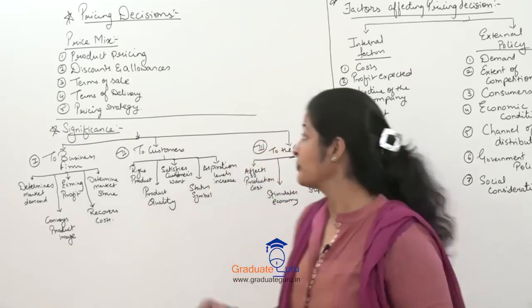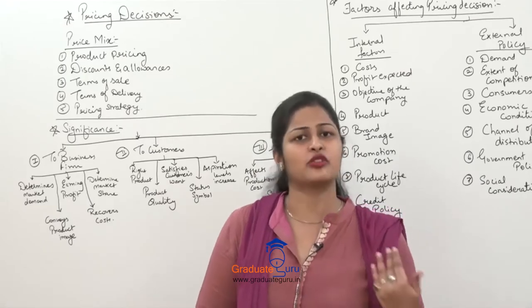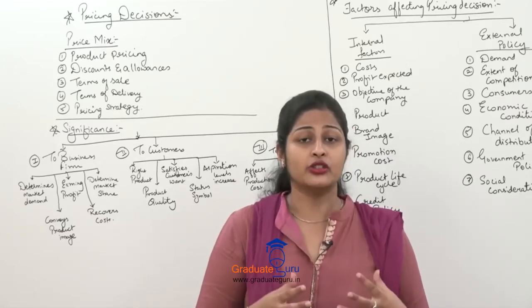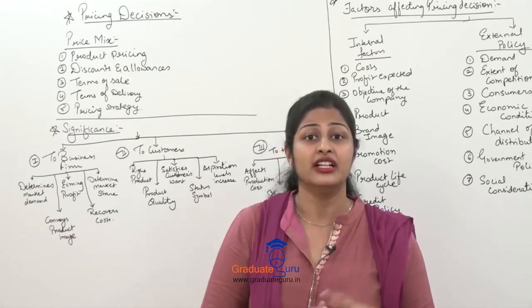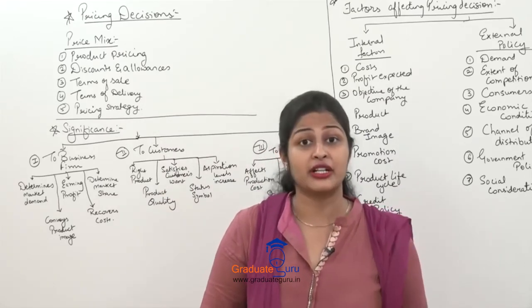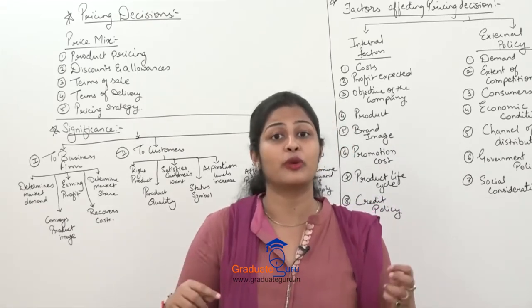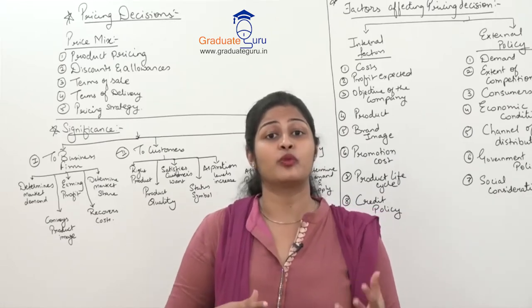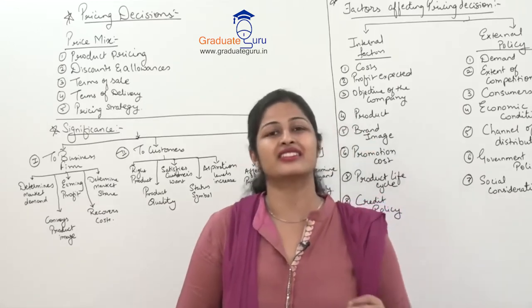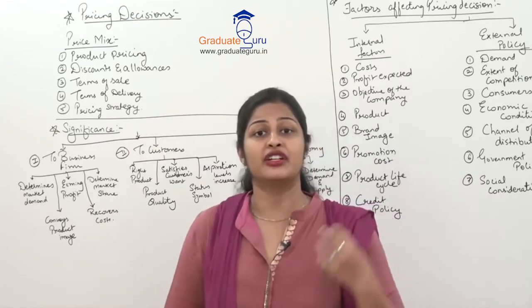The first variable in the pricing mix is product pricing — what should the price of the product be in the market? In a competitive world, if you can't judge your price, you simply copy the competitor's price. Factors influencing product pricing include how much it costs to make the product, demand in the market, whether it is consumed daily, the length of the distribution channel, packaging requirements, and the shelf life of the product.